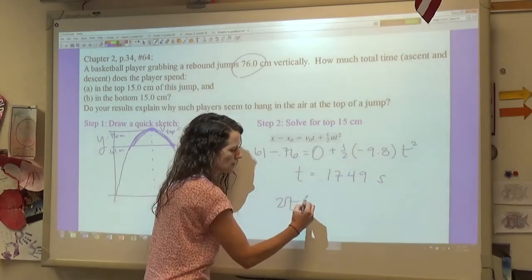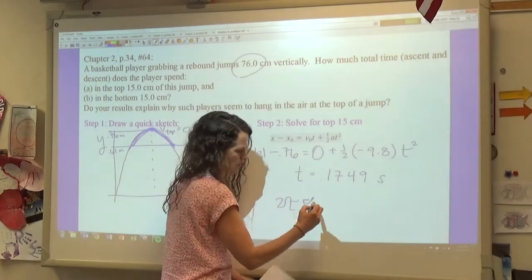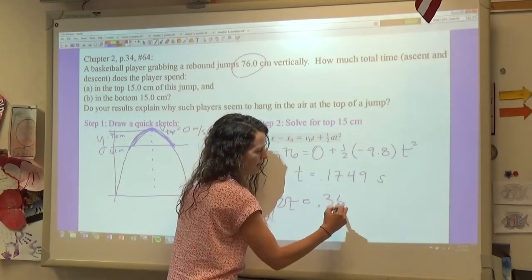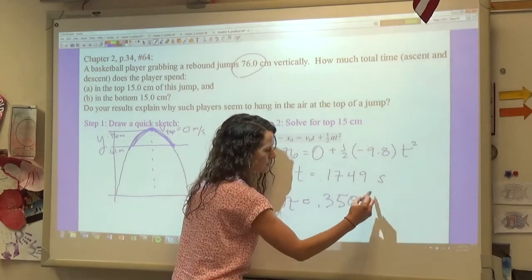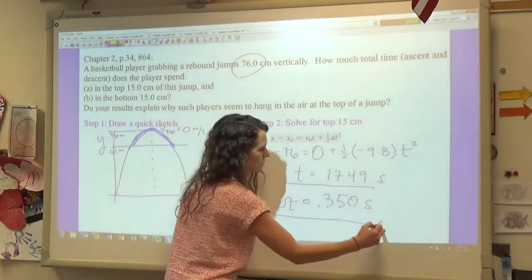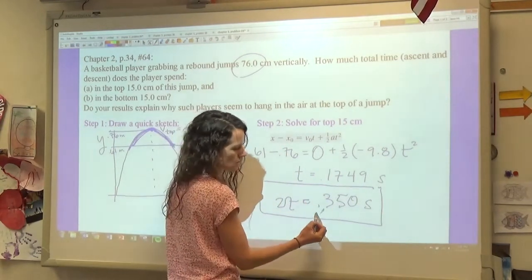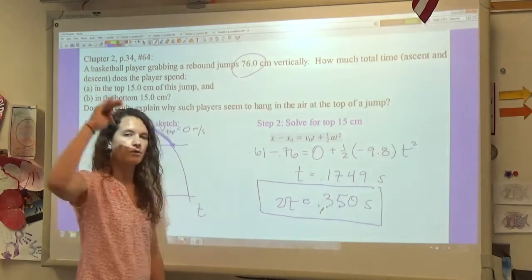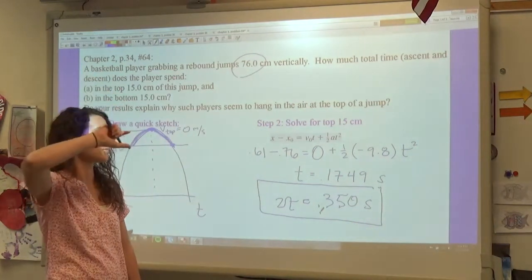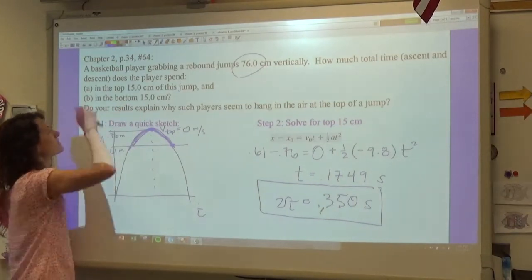So 2t equals 0.350 seconds, and so this is the answer to part A—0.350 seconds. That's how long they're in the air for the top 15 centimeters of the jump. So now let's solve for the bottom 15 centimeters.